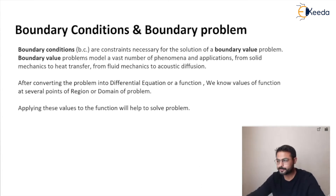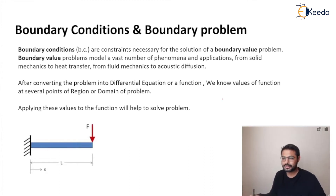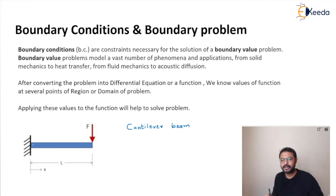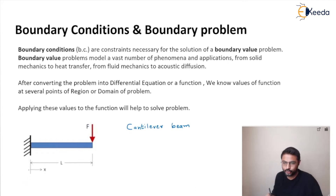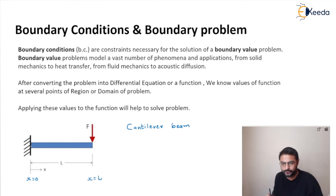Let's understand it by one example. Here you can see this is a cantilever beam. It is a cantilever beam because at one end it is fixed and on the other end it is free. On the free end a force is applied, denoted by F. This cantilever beam has length L. At the fixed end the value of x is 0, and the displacement u would be 0 at that end. On the free end, displacement is unknown — that is what we want to find out.